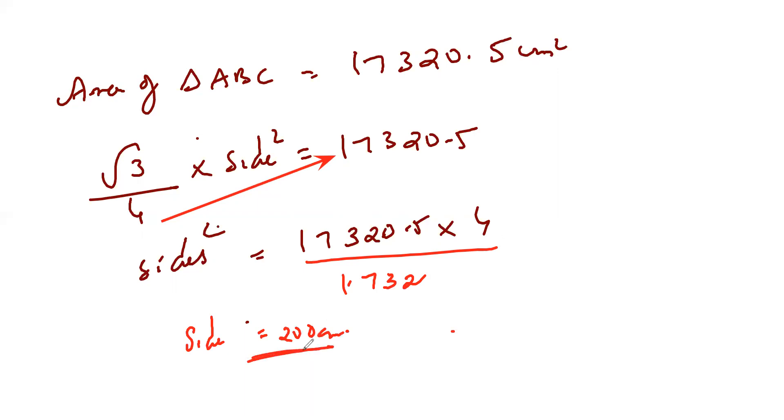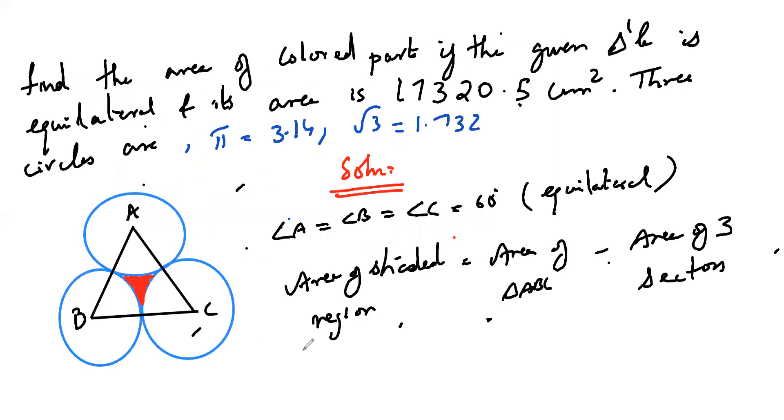But the question is to find the shaded part. If the side is 200 centimeter, then the radius is the side, one side is 200 centimeter. Then what is my radius here? Half of it. Radius is equal to half, that is 100.